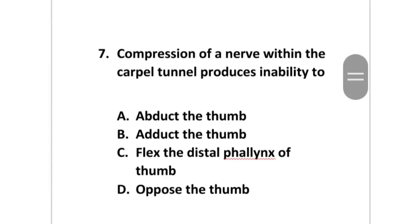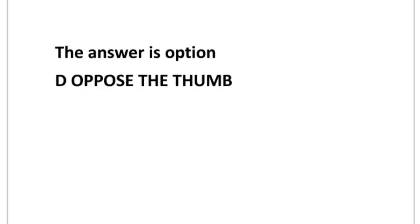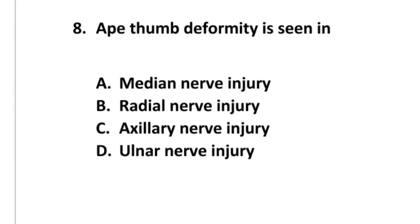Compression of a nerve within the carpal tunnel produces inability to do which of the following: abduct the thumb, adduct the thumb, flex the distal phalanx of the thumb, or oppose the thumb? The answer is option D: oppose the thumb.